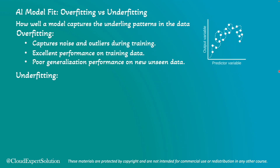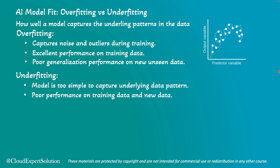On the other hand, underfitting happens when a model is too simple to capture the underlying patterns in the data. It performs poorly on both training and new data. Think of a student who only skims the textbook and misses key concepts — they don't truly understand the topic, leading to poor performance on both practice tests and actual exams. An underfitting model fails to capture important patterns, and it may happen due to problems in the training data or the selected features used for model training.